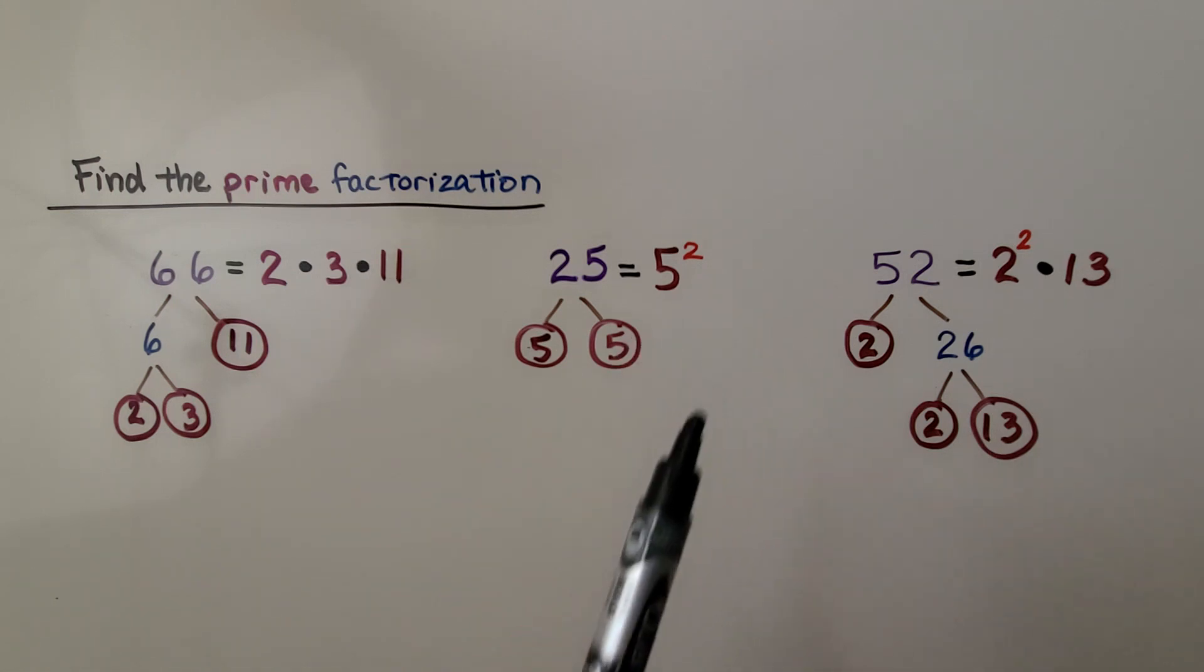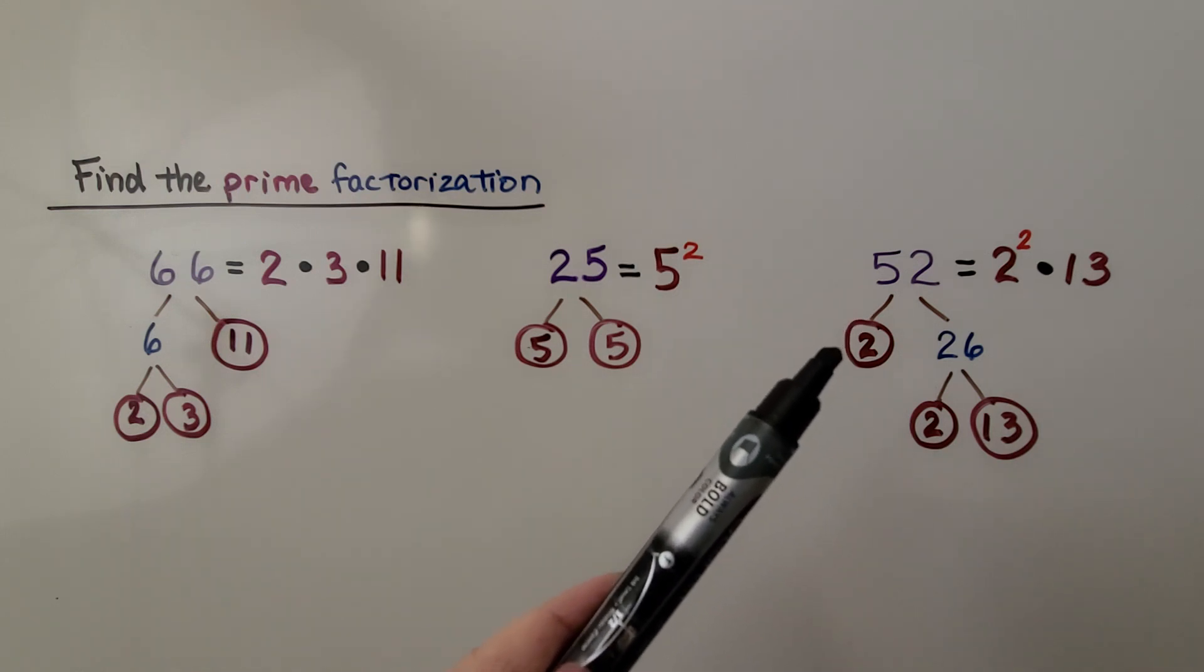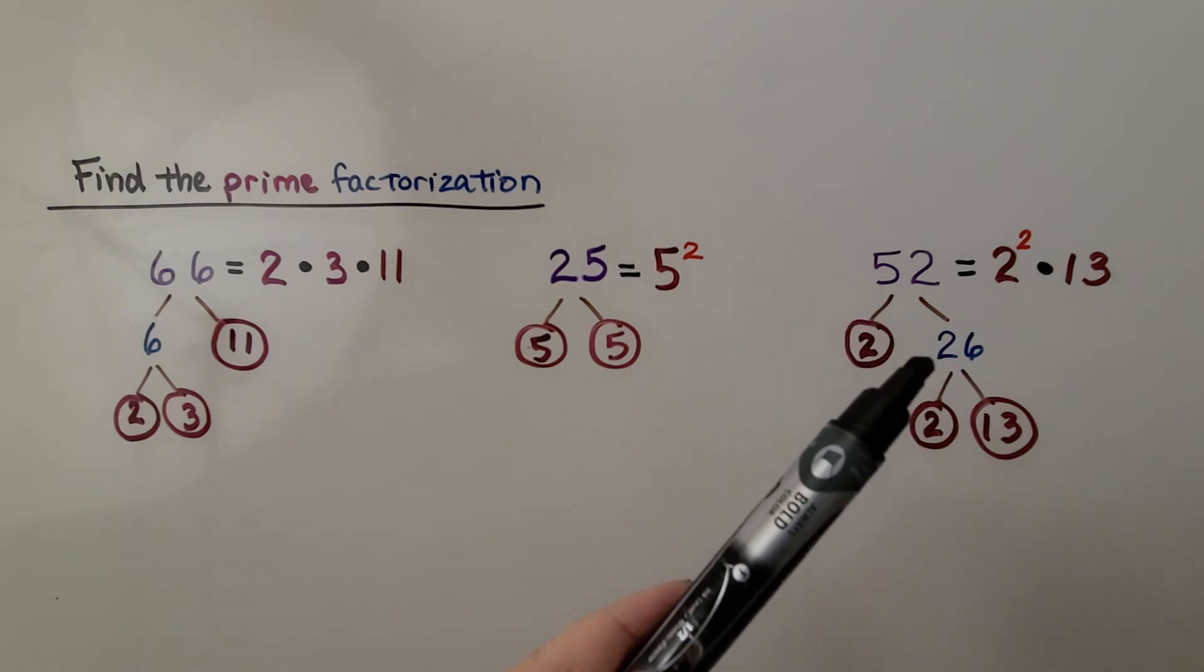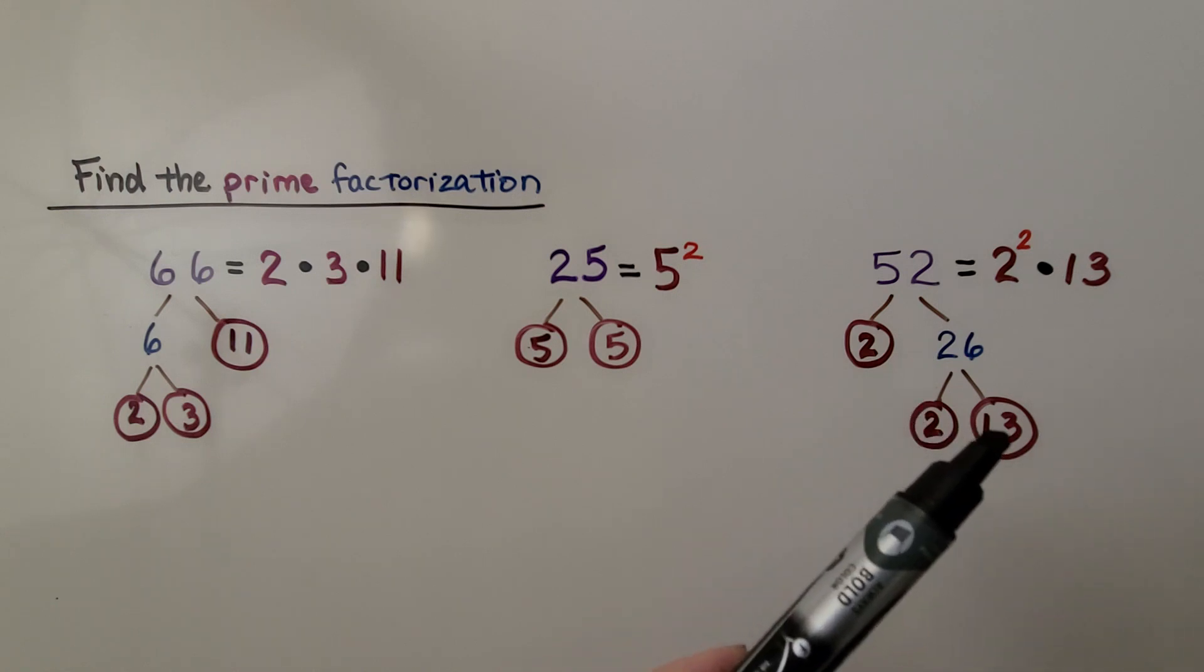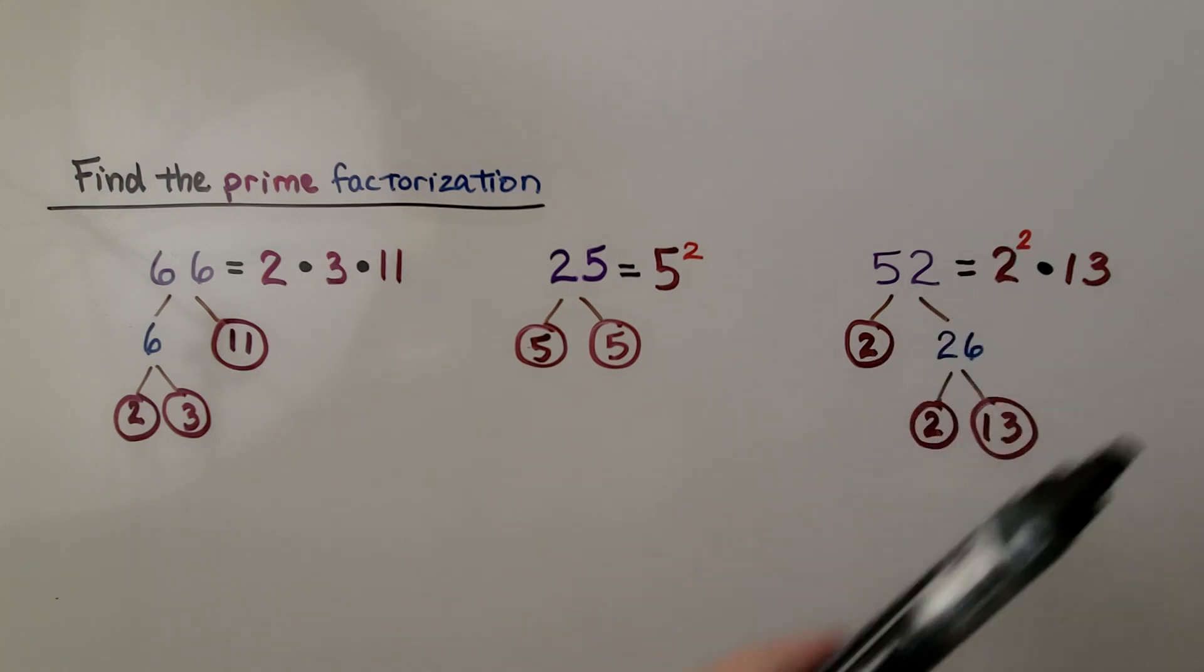For 52, we ask ourselves, can 52 be divided evenly by 2? Well, yeah, 2 times 26 is 52. Then we have 26. Can that be divided evenly by 2? Yes, 13. And 13 is not a product of two factors, so we know the prime factorization for 52 is 2 squared, or 2 raised to the second power, times 13.